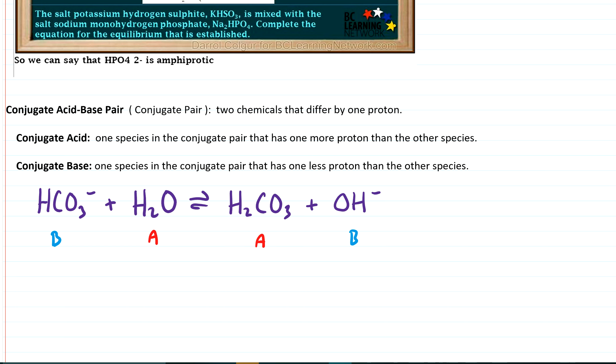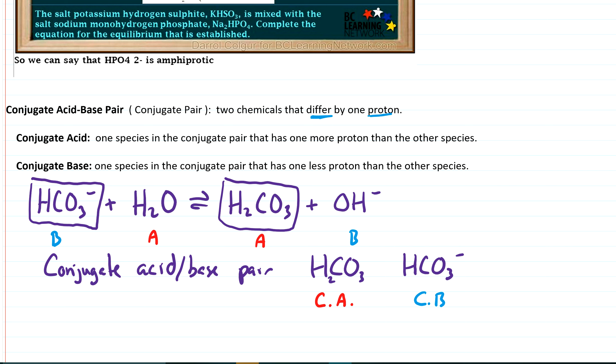So if we look at the pairs or species of chemicals that kind of resemble each other, we've got this compound on the reactant side, and we've got this compound on the product side. And if you look at those, the only difference between those is a single proton difference. So that's what we refer to as a conjugate acid-base pair. So H2CO3, that would be the conjugate acid. And then HCO3- would be the conjugate base. So basically, they differ by one proton.